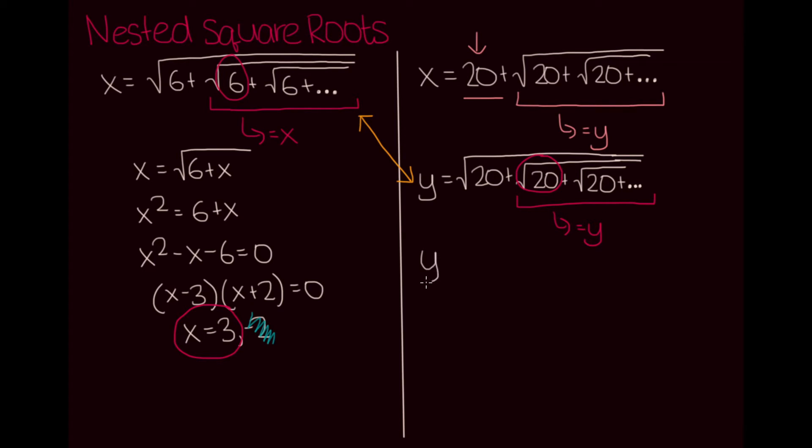This will allow us to rewrite our equation as y is equal to the square root of 20 plus y. And if we square both sides, like we did in the last problem, we get y squared is equal to 20 plus y.